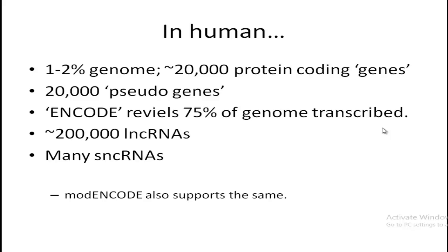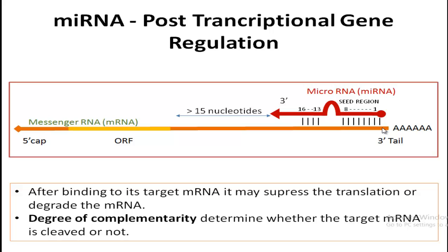In addition to long non-coding RNAs, many small non-coding RNAs are also present. These long non-coding RNAs and small non-coding RNAs are classified mainly based on nucleotide length. MOD ENCODE is the same ENCODE project but in different model organisms. These MOD ENCODE results also support the same finding — there are relatively fewer protein-coding genes in a eukaryotic genome, as many pseudogenes, and most of the DNA is transcribed into RNA that does not code for any protein. These RNAs play a critical role in post-transcriptional gene silencing.